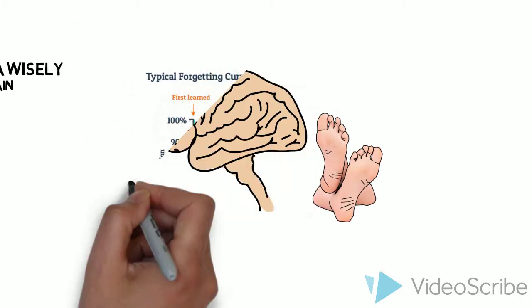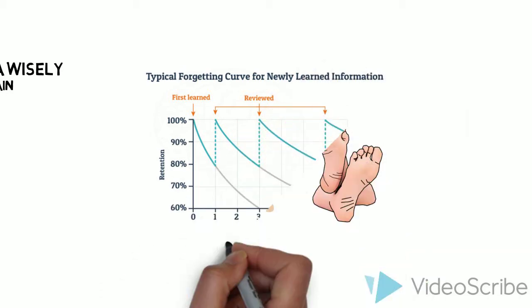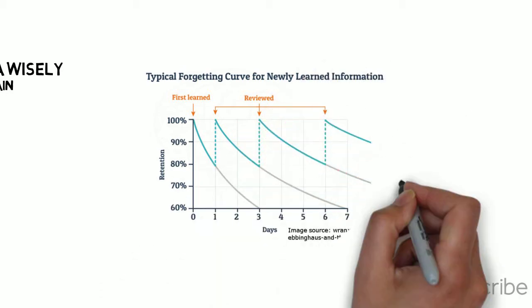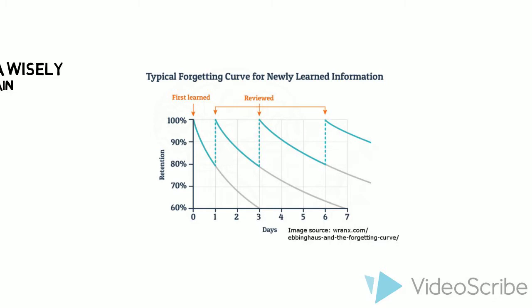The brain also forgets lots of information. Research on the forgetting curve shows that within one hour, people often forget an average of 50% of the information presented.